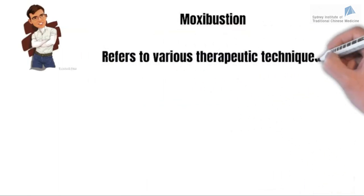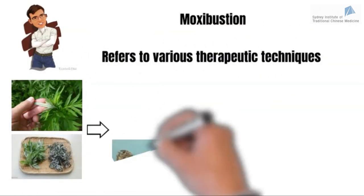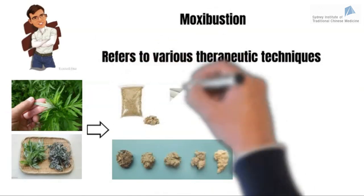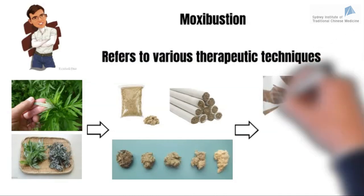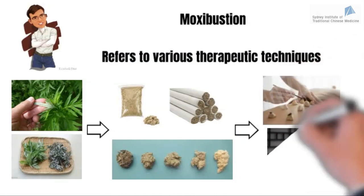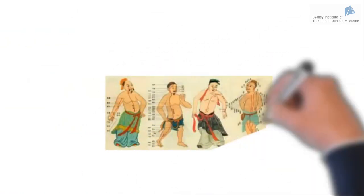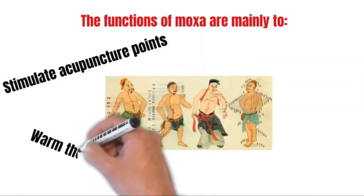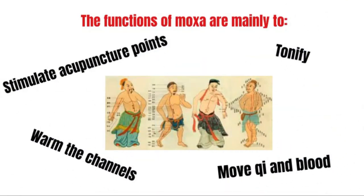Moxibustion refers to various therapeutic techniques in which dried mugwort is burned to produce heat. When mugwort is dried, it produces a punk that is called moxa. Moxa can be used directly or rolled into moxa rolls. The functions of moxa are mainly to stimulate acupuncture points, to warm the channels, to move Qi and blood, and to tonify.